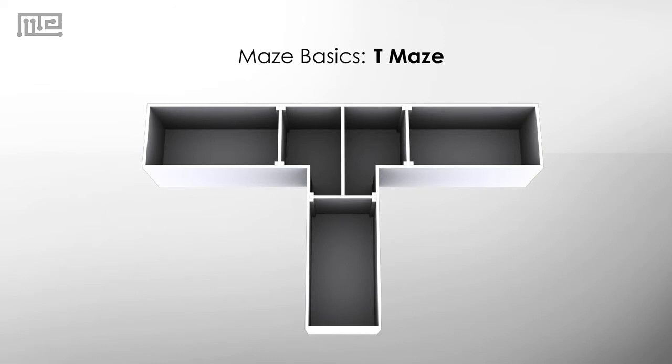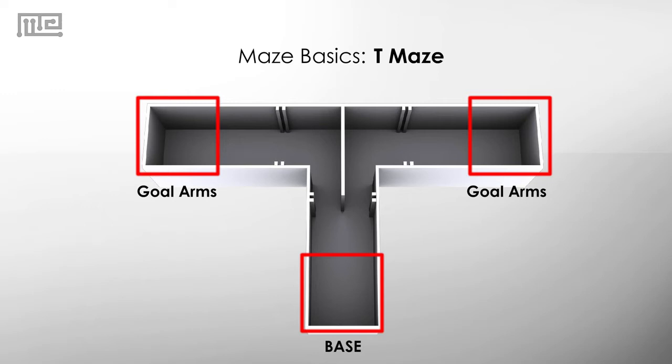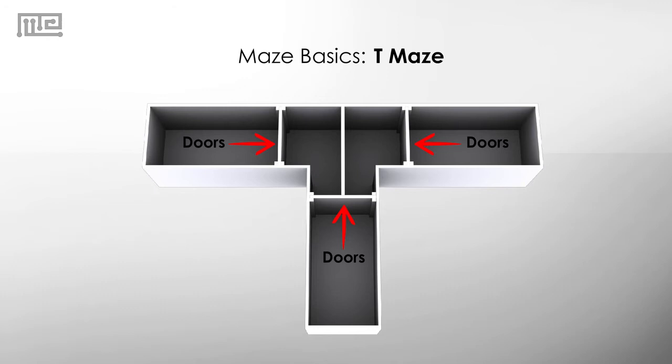The T-Maze is an enclosed apparatus in the form of a T placed horizontally. The mouse starts at the base of the maze. The other two arms are called goal arms and usually contain a food reward.